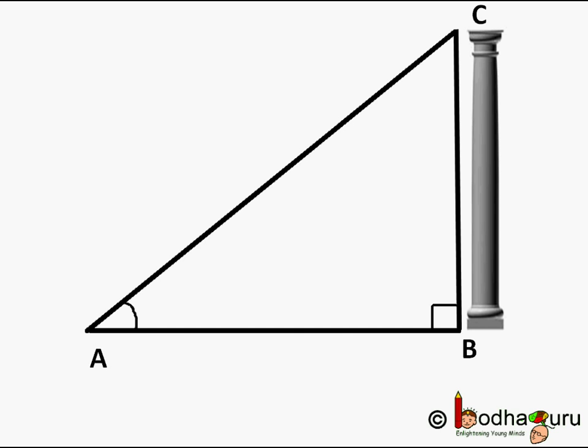Let us mark the three points: A which is the starting point of the ramp on the ground, B which is the base of the pillar, and C which is the tip of the pillar. All these together form a right angle triangle where B is the right angle.